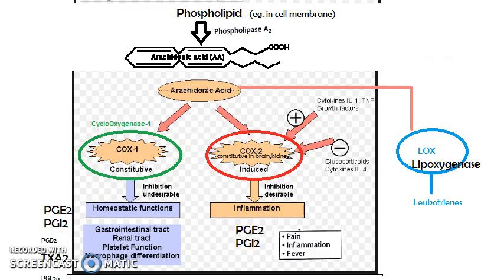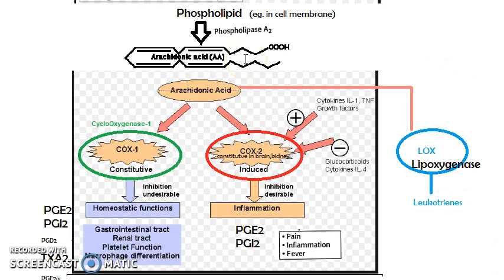Welcome. In the previous video we saw an introduction to non-steroidal anti-inflammatory drugs. Let's continue adding more information. Phospholipids are present in the cell membrane; with the help of phospholipase A2 they are converted into arachidonic acid. Arachidonic acid can be acted upon by COX-1, COX-2, or lipoxygenase.